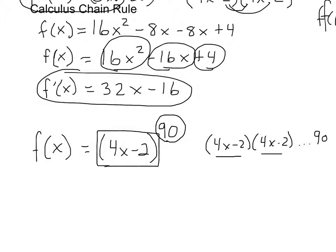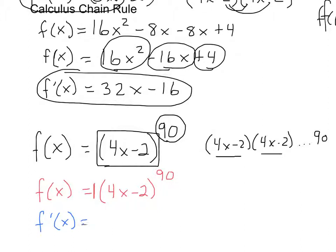Let's rewrite the problem: f(x) = (4x - 2)⁹⁰, with an understood coefficient of 1 in front. The most difficult part of the chain rule is knowing when you need it. To apply it, treat the inside as if it were a single variable. Some people use u-substitution, calling it u, so the function looks like f(x) = 1·u⁹⁰.